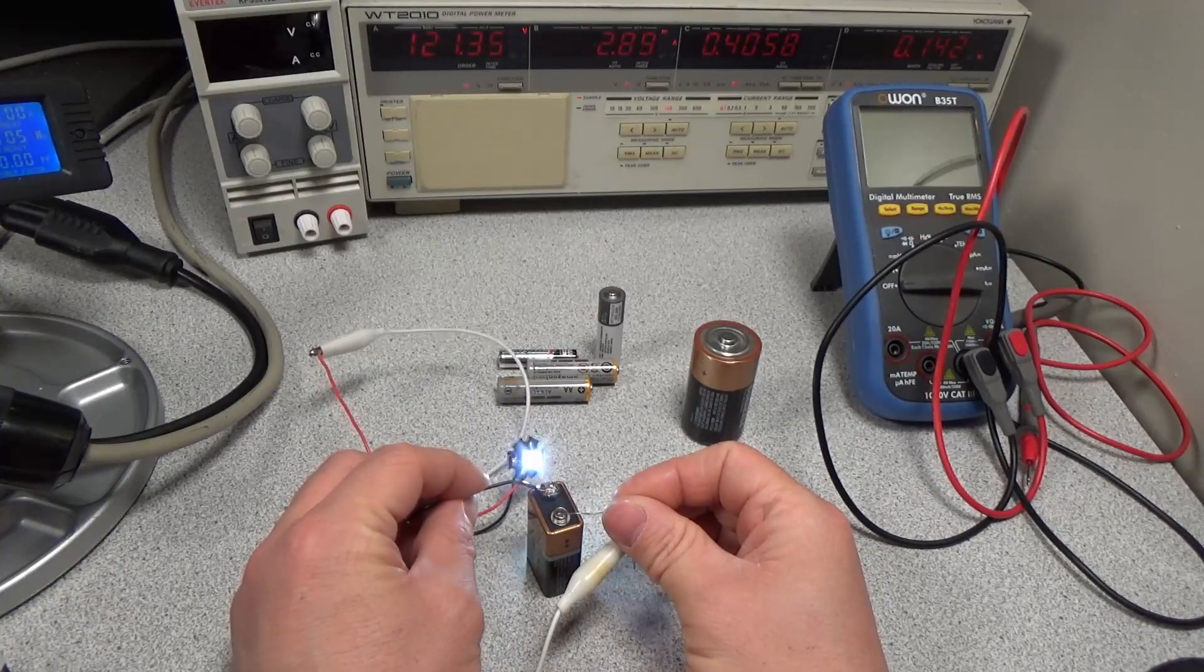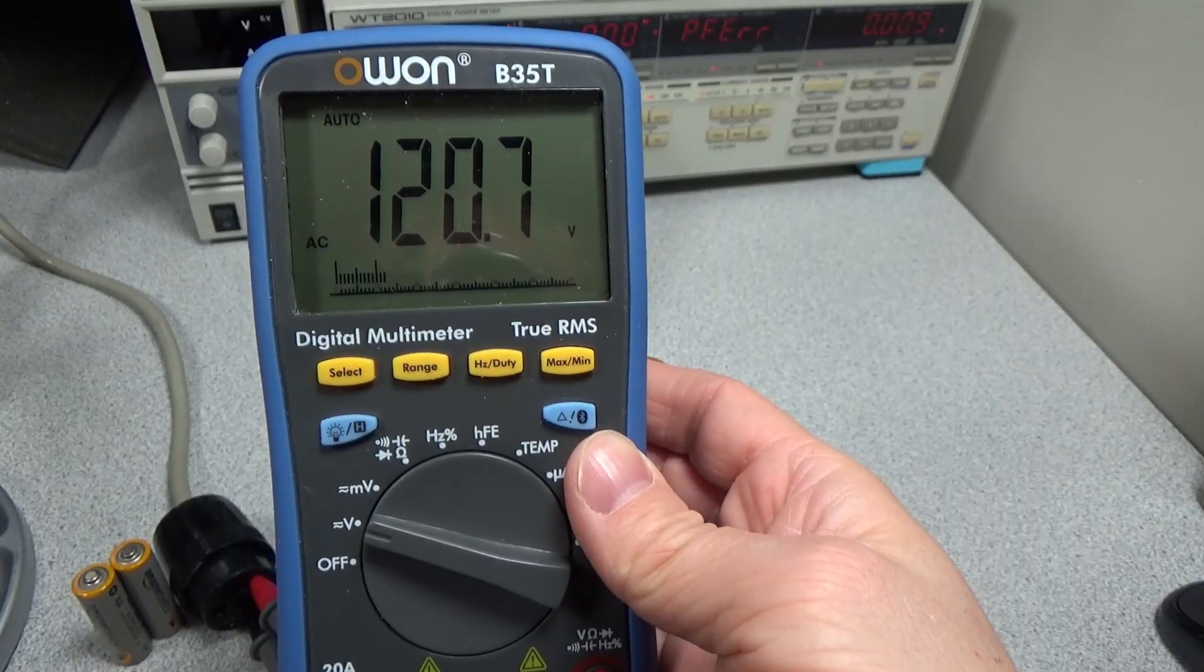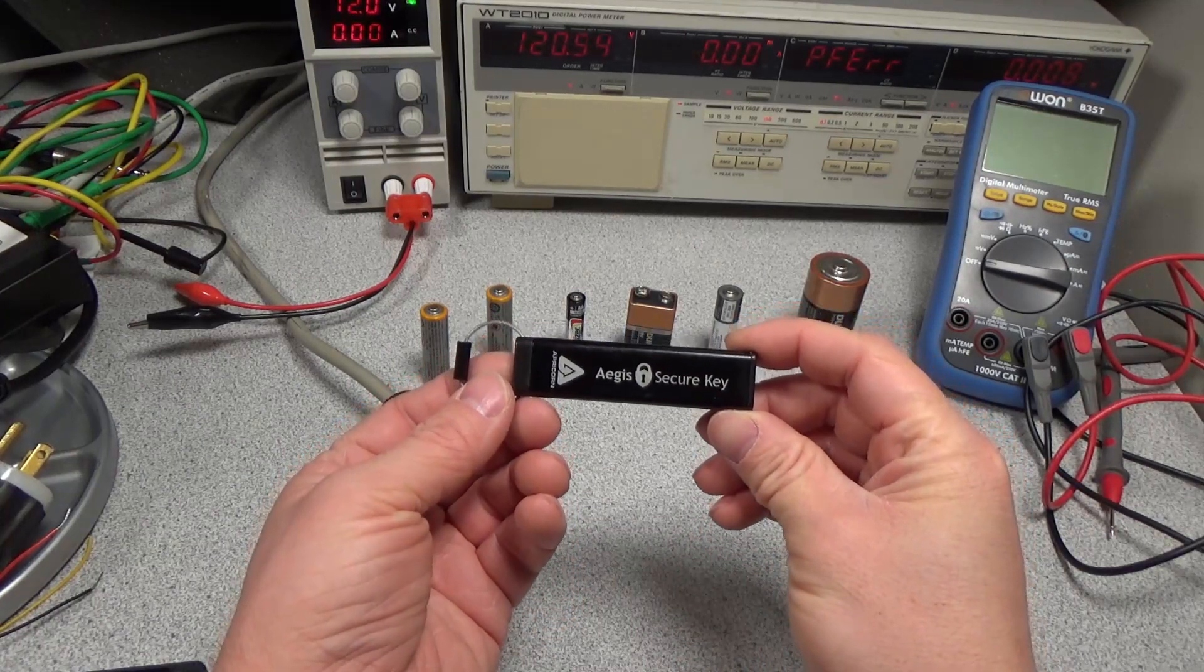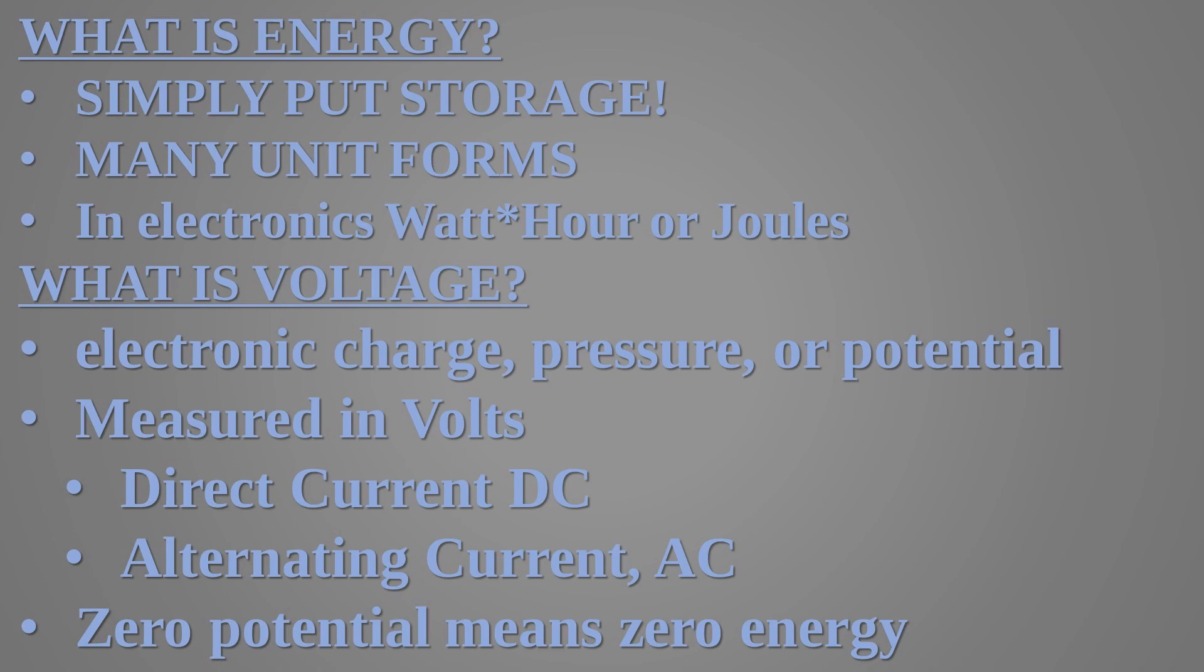Time to get into the first topic which is batteries and voltage. A battery is a device that stores energy. Everyone is familiar with batteries. Batteries are used in phones, computers, clocks, cars, I even have a USB stick with a battery. But what is energy and what is voltage?